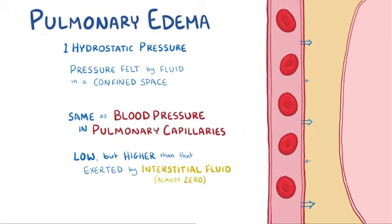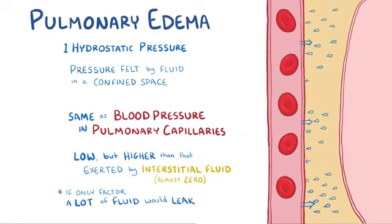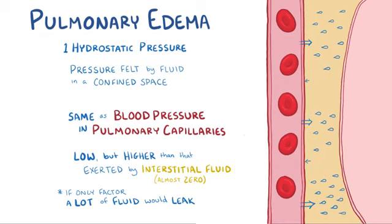So to be clear, if hydrostatic pressure was the only factor involved, a lot of fluid would be continuously leaking out of the pulmonary capillaries and into the lungs' interstitial space.